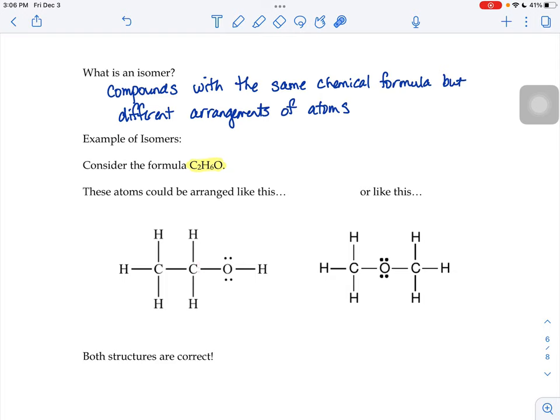In this structure, there's two carbons, one, two, three, four, five, six hydrogens, one oxygen. They all have the proper number of electrons. This structure works. Or you could take that C2H6O and put the O in the middle. And the O separates your two carbons with three hydrogens on the left and three hydrogens on the right. This also works. Both structures are correct.